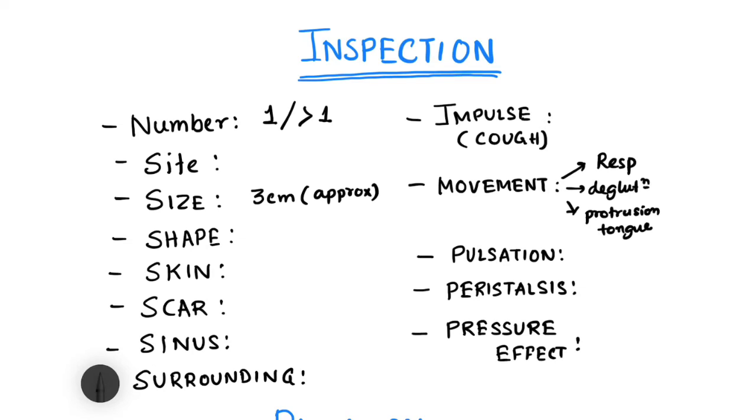If the lump is moving with deglutition, it's mostly a neck lump of thyroid origin. If the lump is moving with protrusion of tongue, in most cases it's a thyroglossal cyst. Then pulsation - whether you can see any pulsation over the lump. You check the patient's pulse and try to see whether the lump is moving with pulsation.